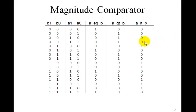Well, here is the truth table then. We have the four inputs B1, B0, A1, A0, and the three outputs A equal B, A greater than B, A less than B. Notice that A equal B is 1 if A and B are both 0, or if they're both 1, or if they're both 2, or if they're both 3.